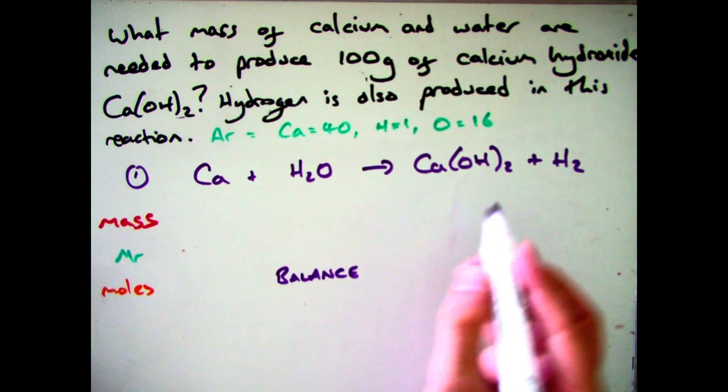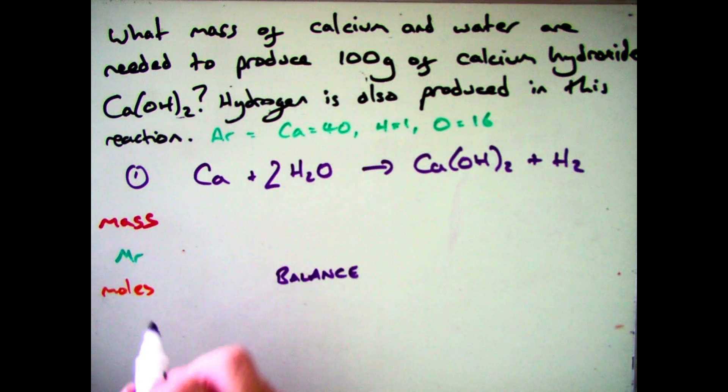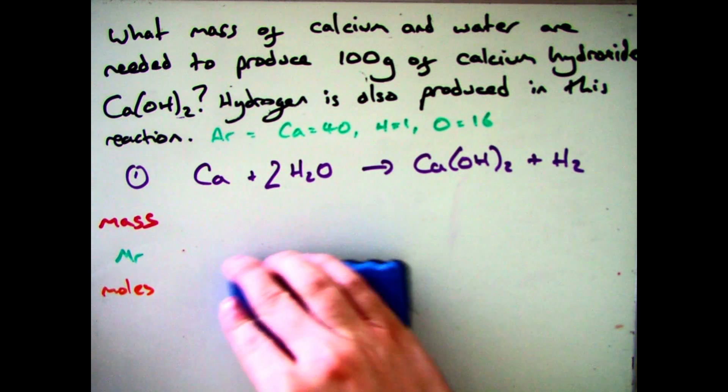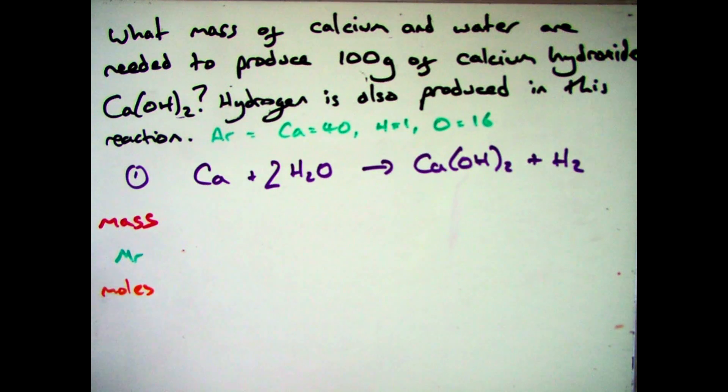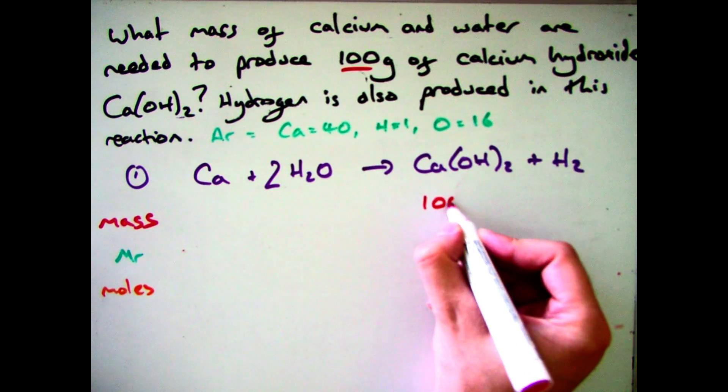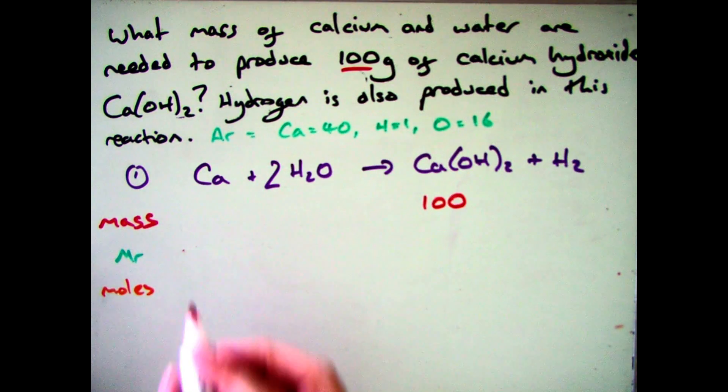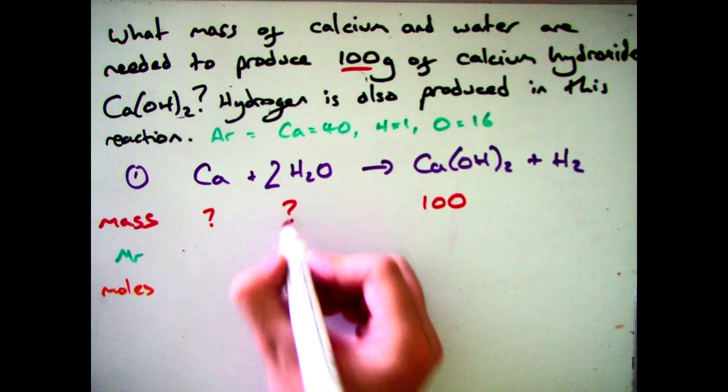So now we've got to balance it. I'm not going to go through that in detail in this video. If you're not sure look at the video on balancing equations. So let's put in what we know then. So we know that I've got 100 grams of calcium hydroxide Ca(OH)2. So let's put that in there. And we want to know the total mass of calcium and water.